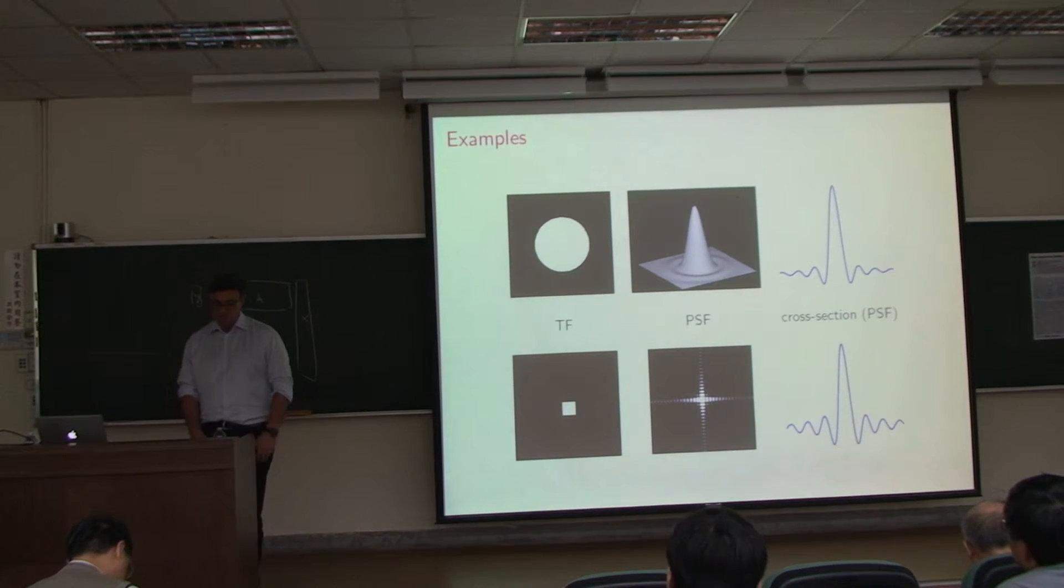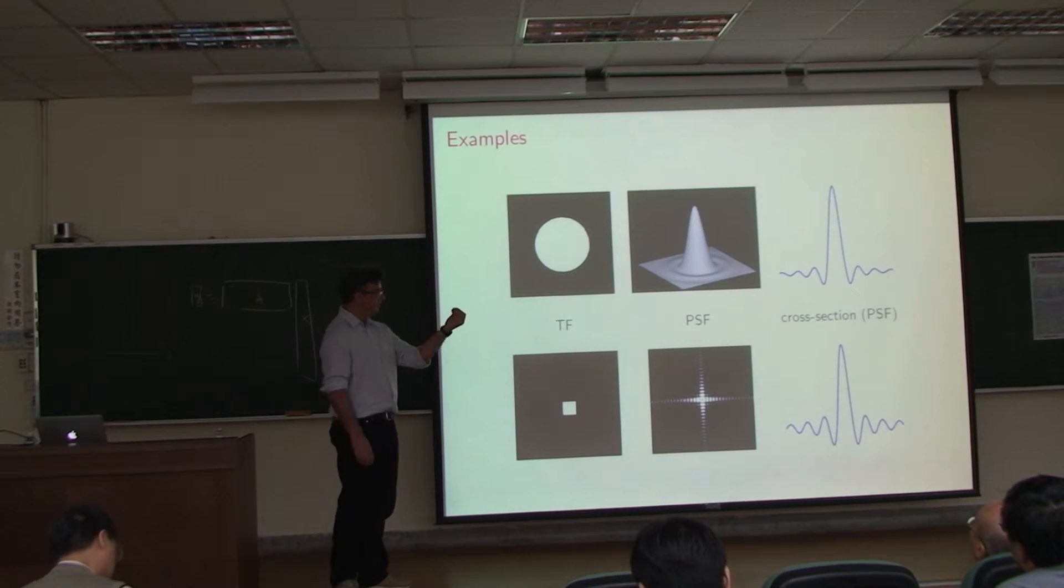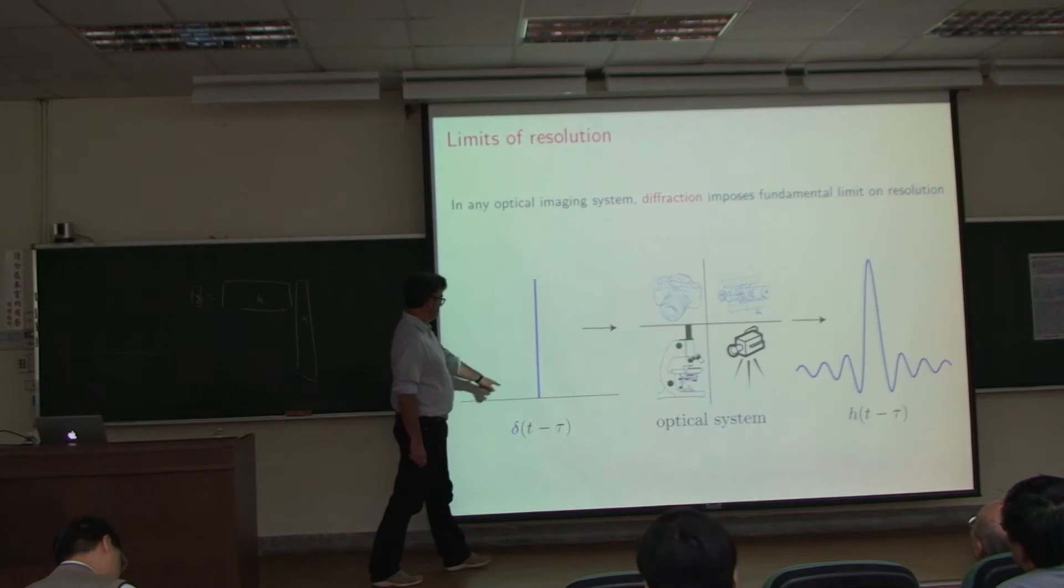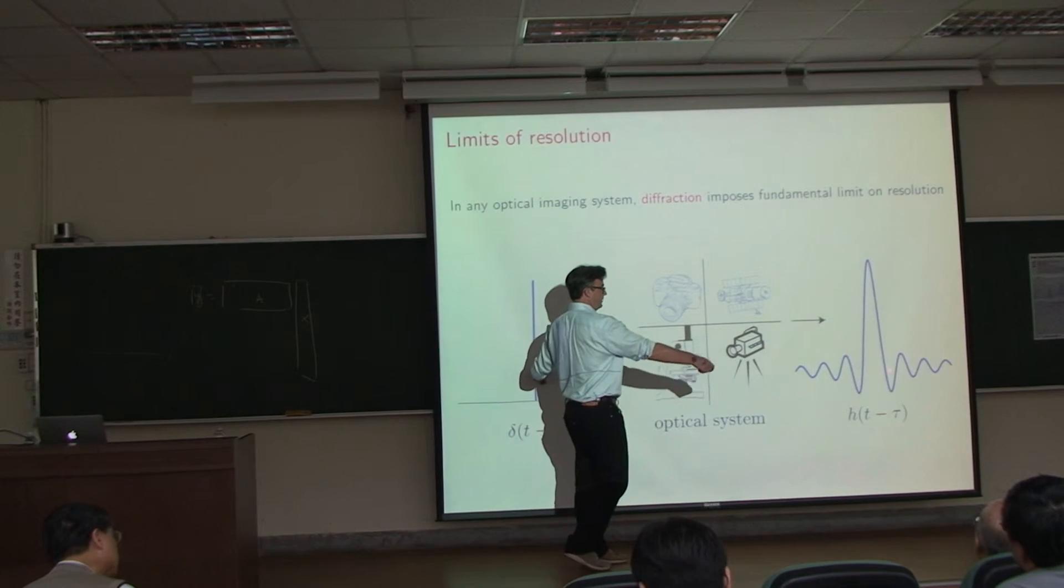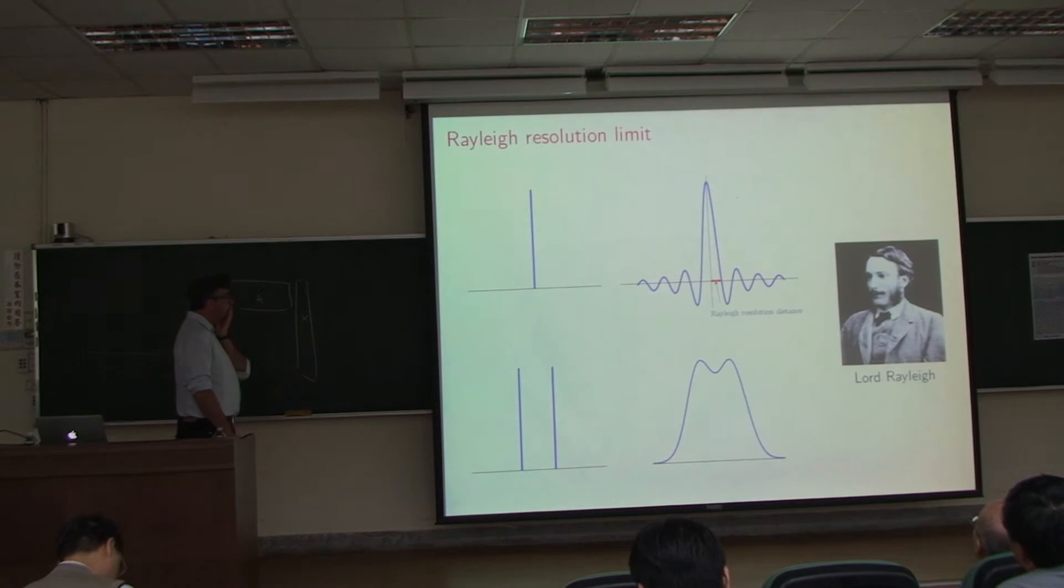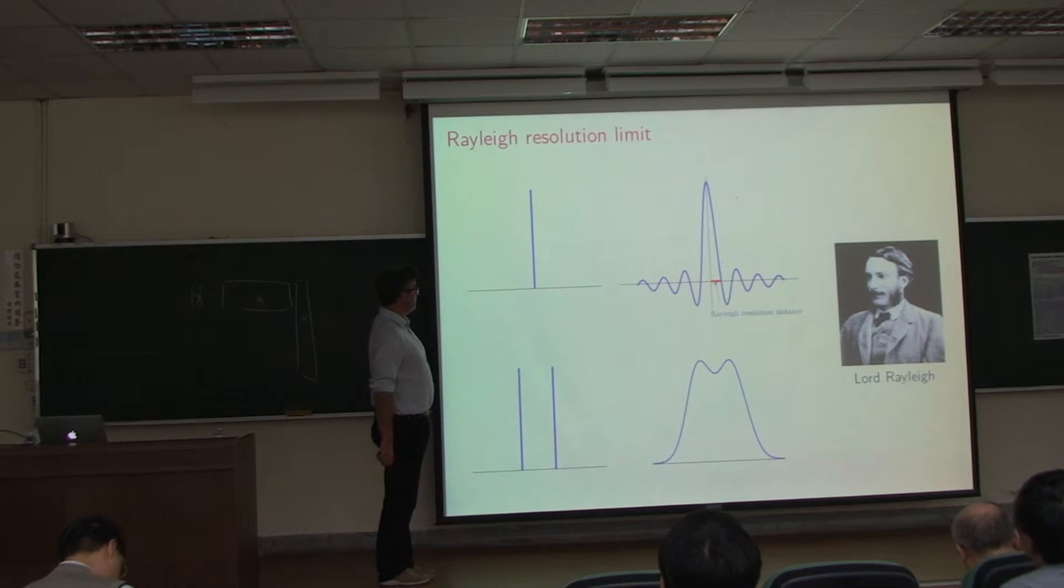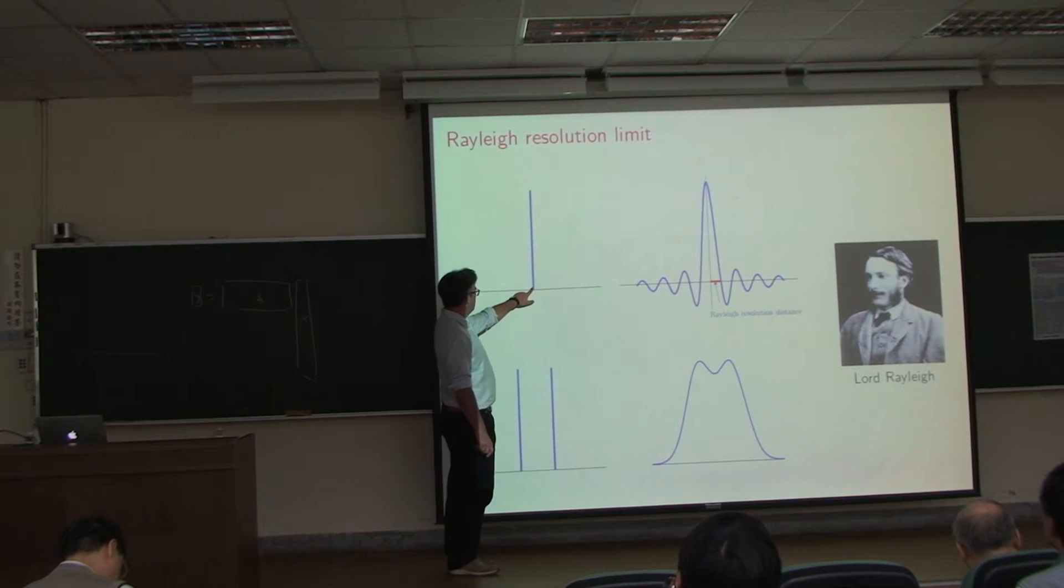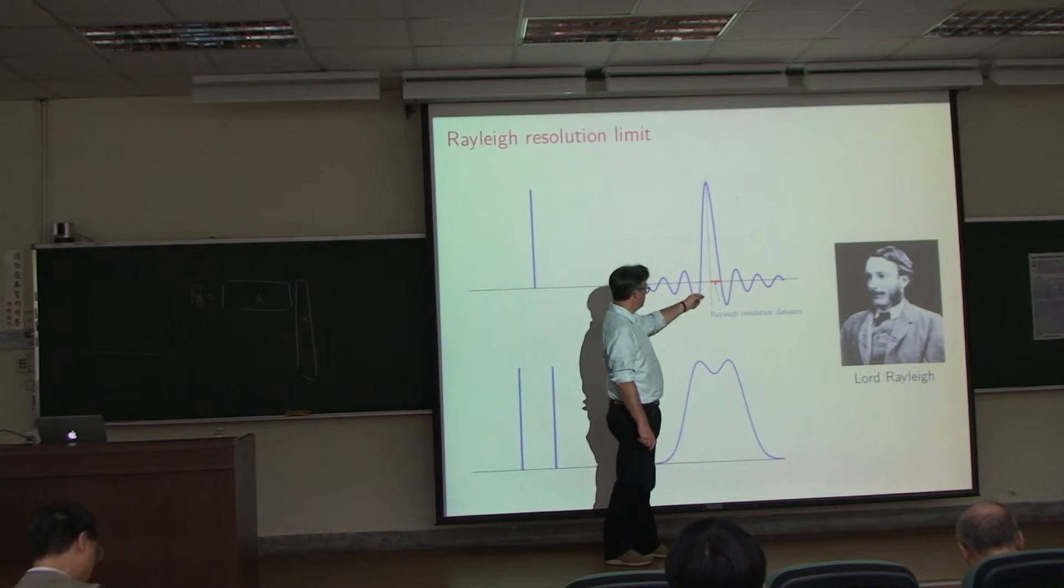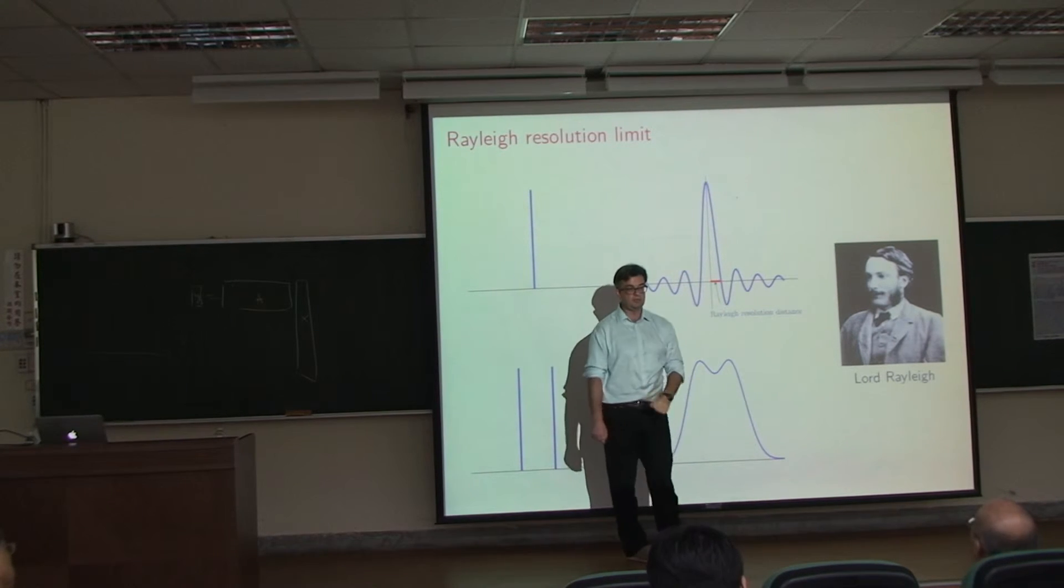We have a single spike, but it appears like this. This distance between the peak and the first zero crossing is typically called the Rayleigh distance.